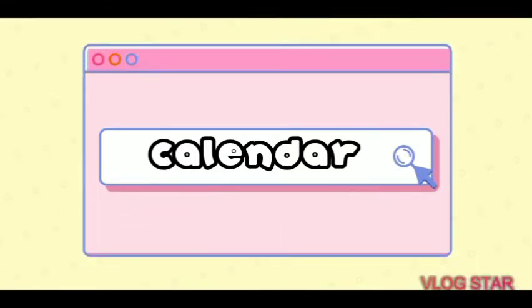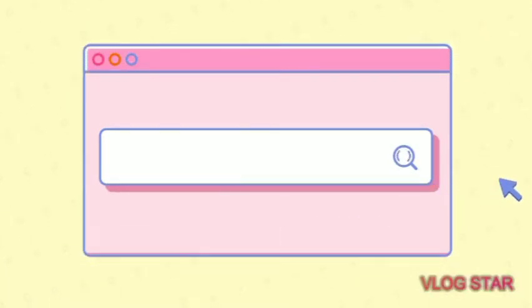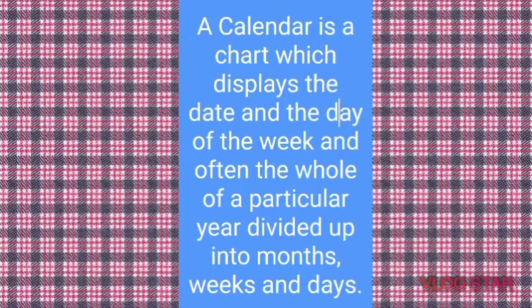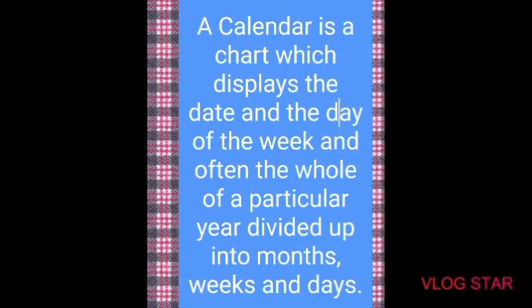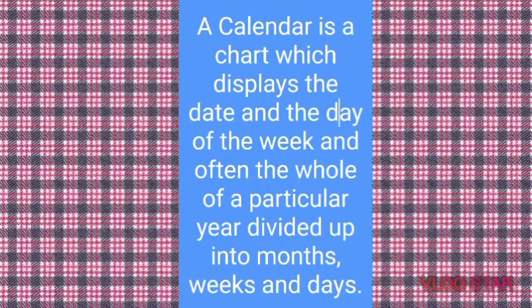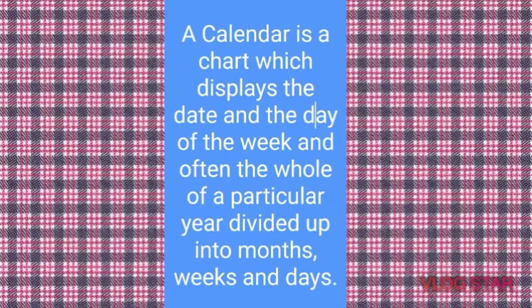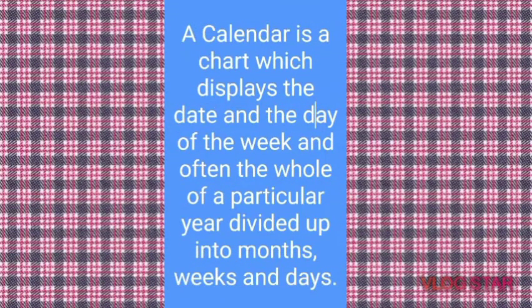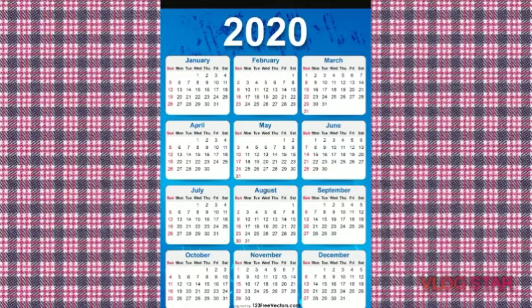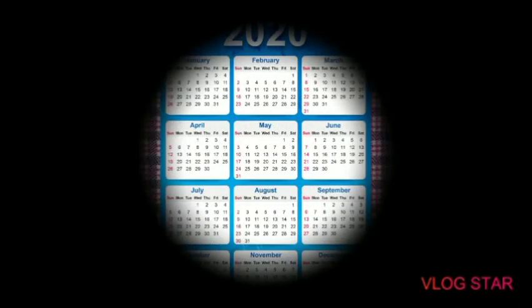From the calendar, it is easy for us to learn about what date or month or day will come next or after 15 days. We can define the calendar as a chart which displays the date and the day of the week, and often the whole of a particular year divided up into months, weeks and days. There are different types of calendars.